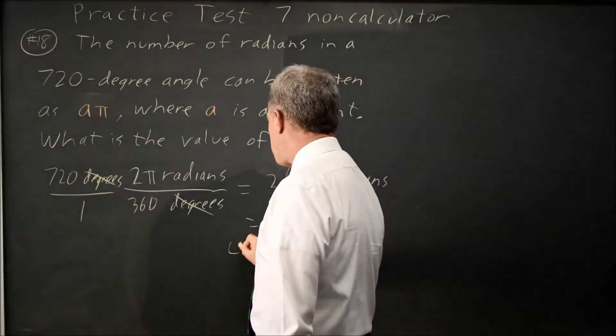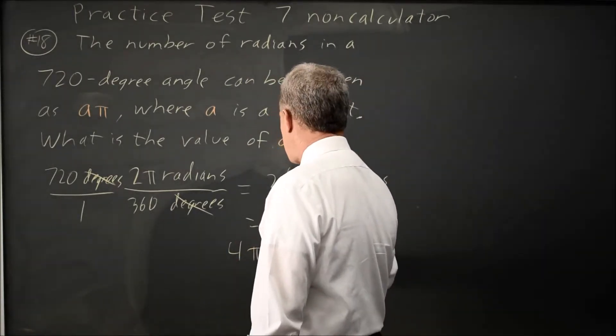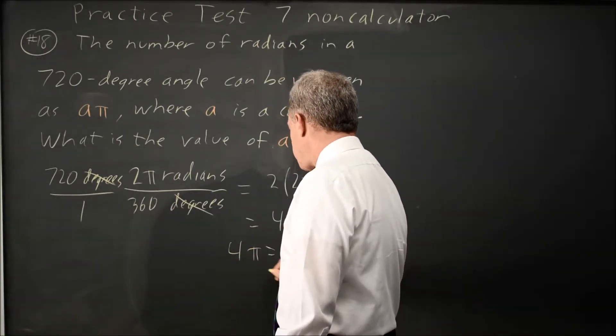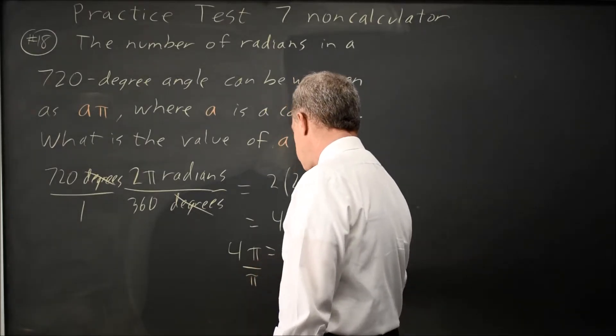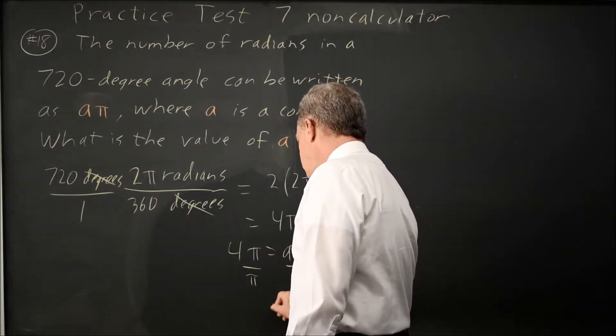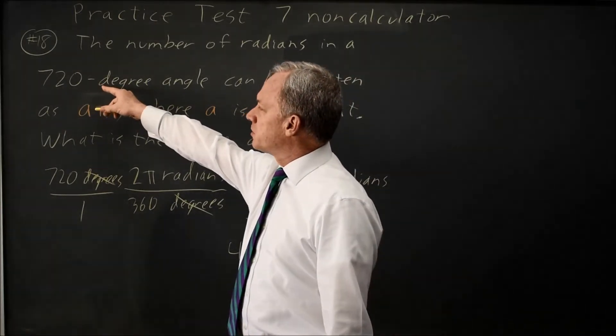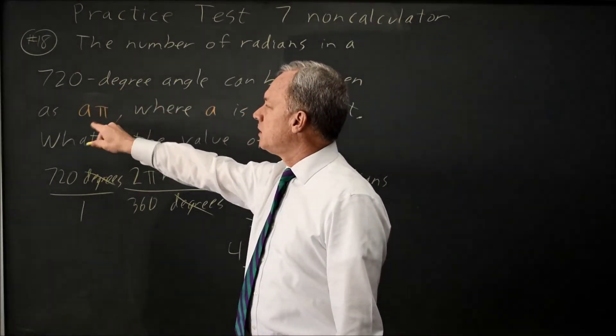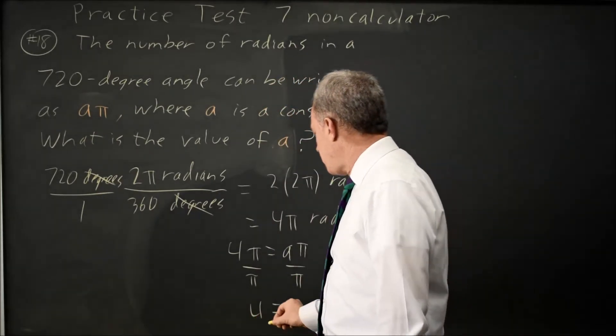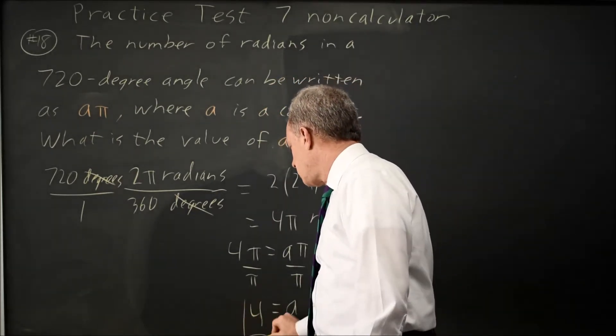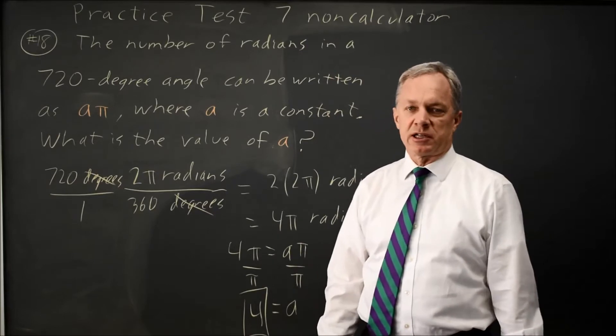And since 4 pi equals A pi, dividing both sides by pi, A equals 4. 4 pi equals A pi came from the question: 720 degrees, which we saw as 4 pi radians, equals A pi. So A equals 4. We would bring in 4 as our answer.